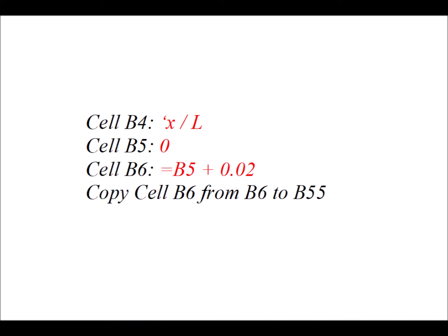This column is going to hold the x/L quantity. In cell B5 type 0. Then in cell B6 type the formula equals B5 plus 0.02, and then copy cell B6 all the way down from B6 to B55. This gives us the x/L values going from 0 up to 1.